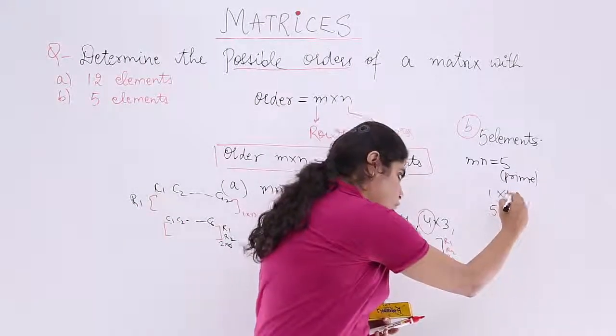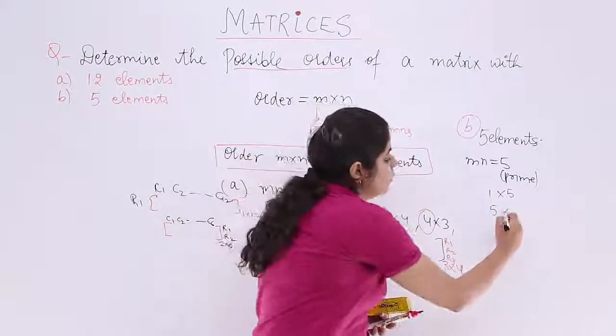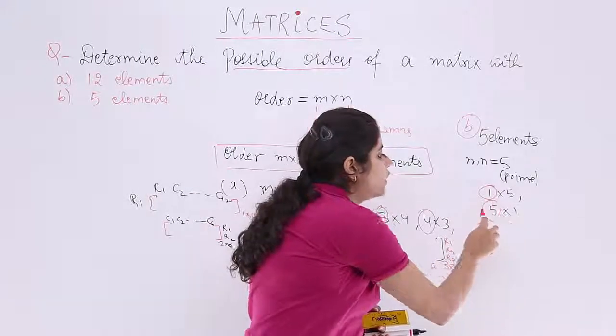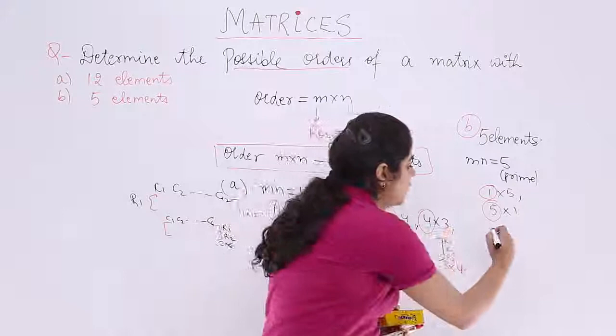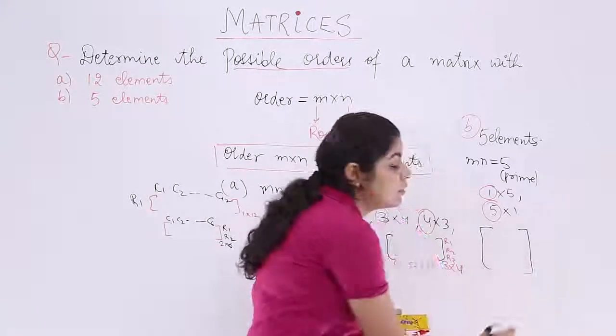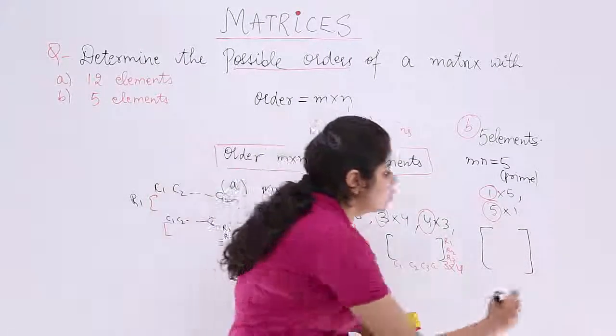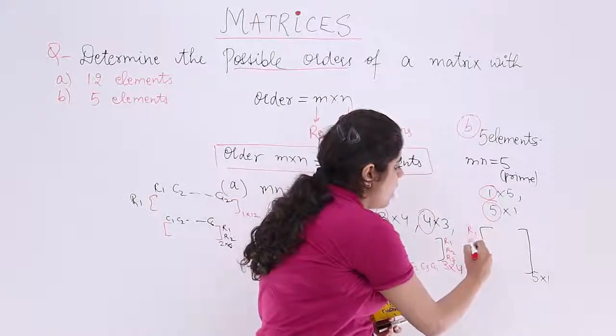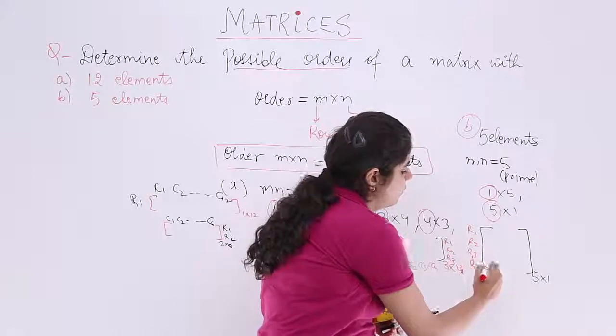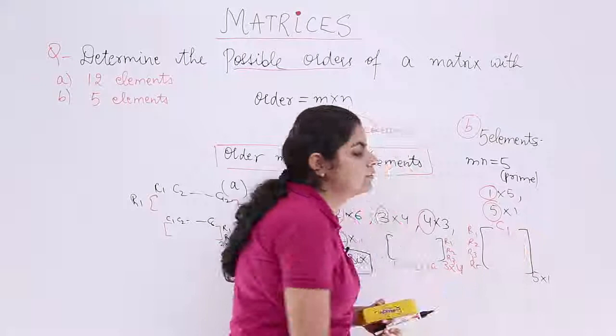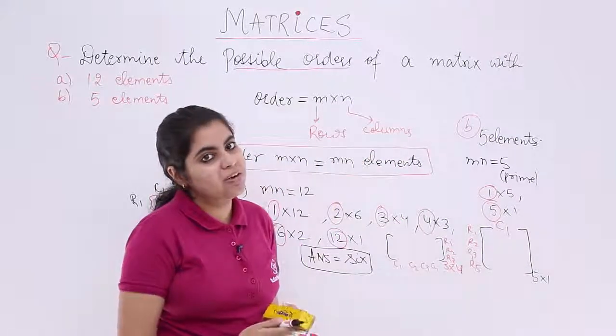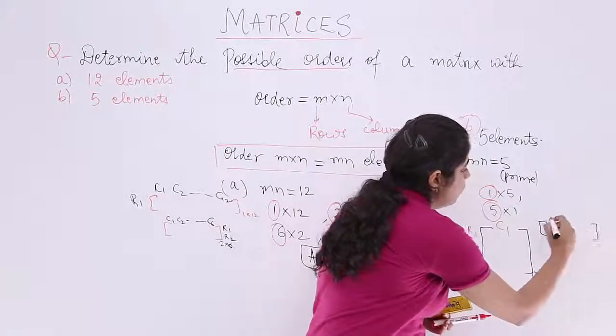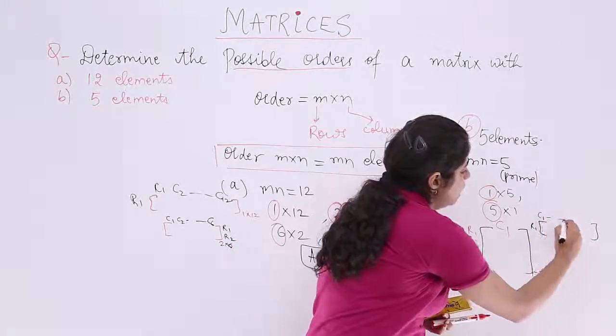So when MN is equal to 5, which is a prime number, how many factors? Only 2: 1 and itself. Two factors. So it is either 1×5 as the first order or 5×1 as the second order. So that means only 2 orders: 1×5 and 5×1. What are they? 5×1 would be 5 rows and 1 column. It is R1, R2, R3 till R5 and only 1 column C1. But what about 1×5? 1×5 would be 1 row and 5 columns.